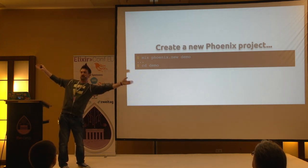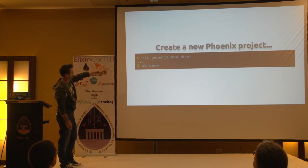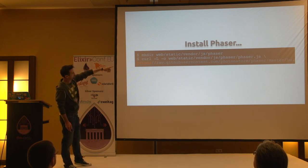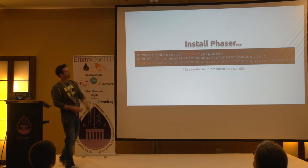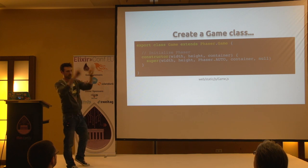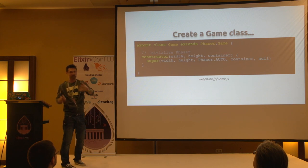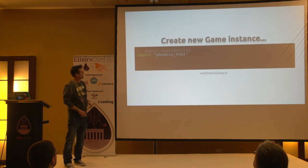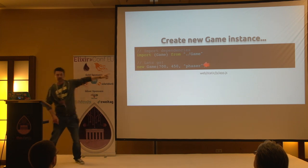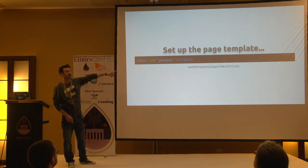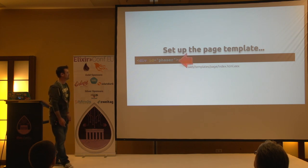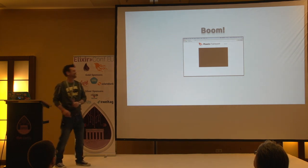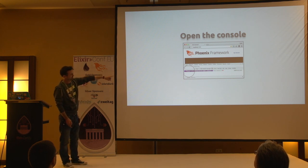Who's used Phoenix? Loads of people. So we'll create a new Phoenix project - mix phoenix.new demo. To install Phaser, we download the JavaScript library and put it in the vendor folder so that Brunch doesn't try to compile ES6. We create a game class with a width, height, and container - the HTML container. In the app.js file we import our game class, instantiate it with a width, height, and element ID, update the index template with a single div tag with an ID of Phaser, then start the server. And we get a blank page.